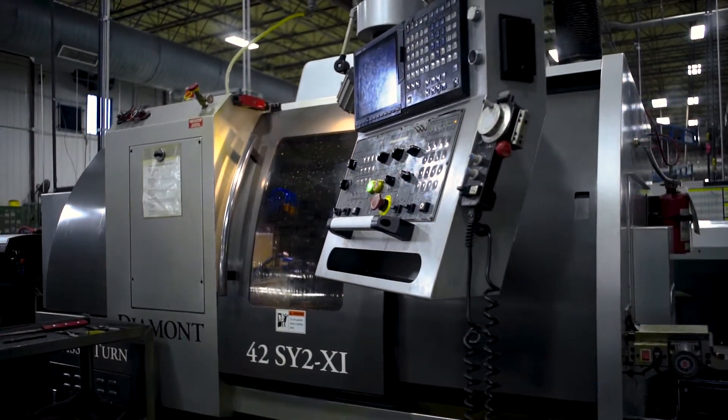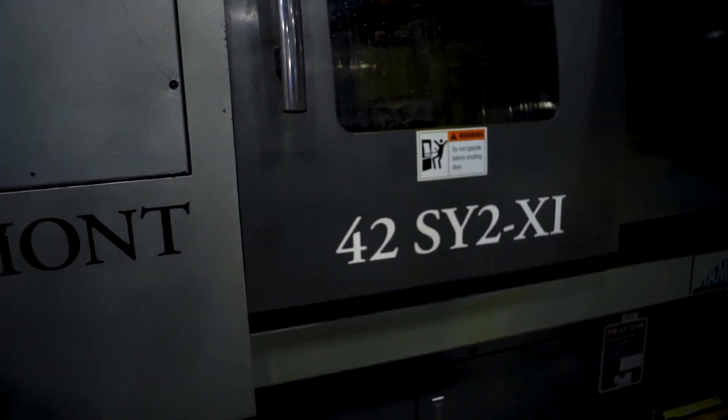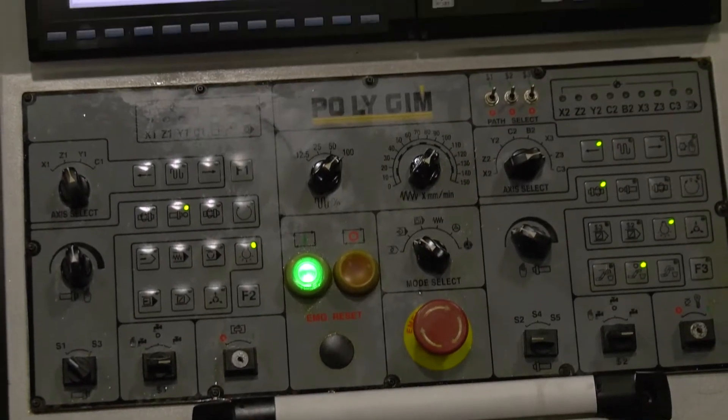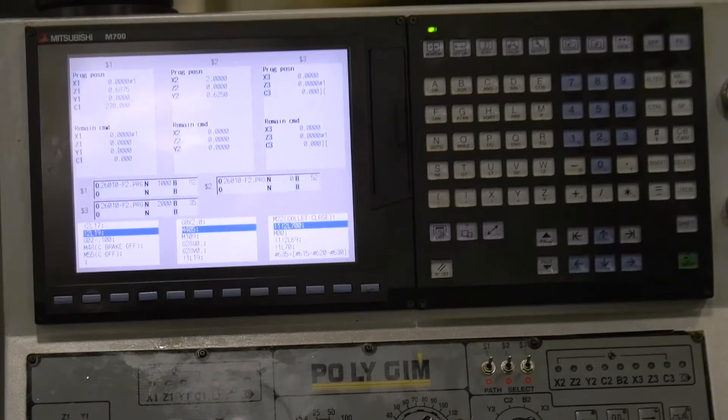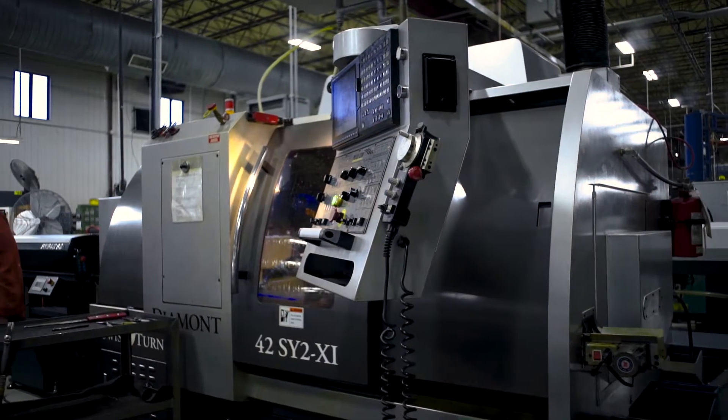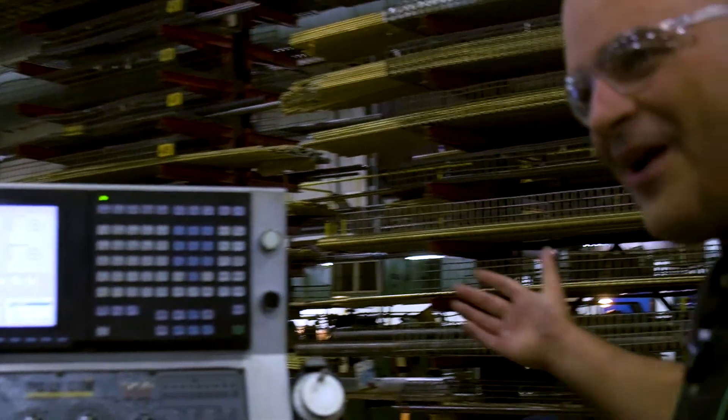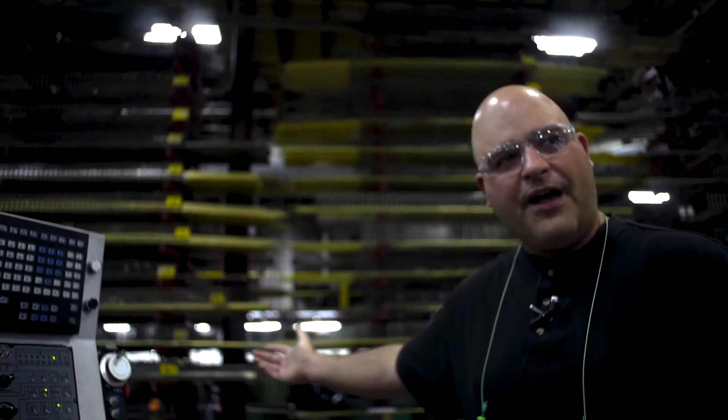This here is another multi-spindle, multi-turret live tooling lathe with gang tooling. It's a Swiss style lathe. It's a good contrast again between old and new. This is very new technology. Some of our older technology is right over here on the other side of the wall. This is how we used to do a lot of this stuff years ago.